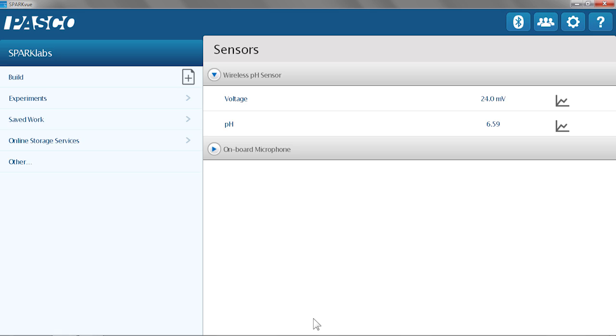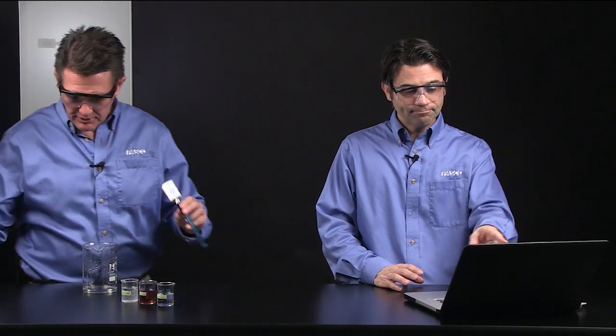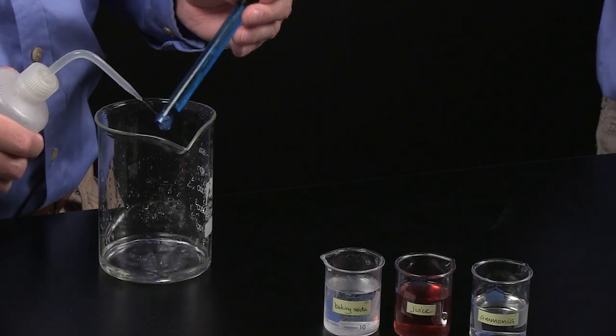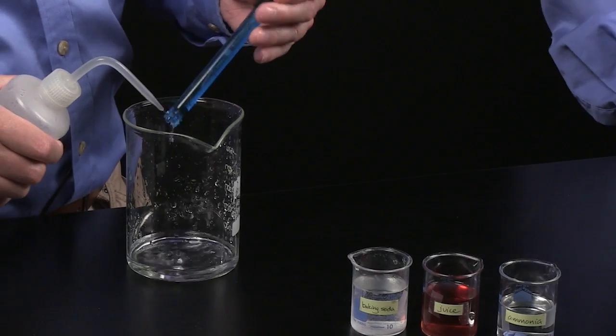And now, once I am connected or paired, my sensor measurements will appear right on the home screen. I'm going to rinse off the storage solution. The bulb at the very end is a little bit porous, so I want to use a little bit of force with the water to get it off. Then I'm going to place it into a baking soda solution.